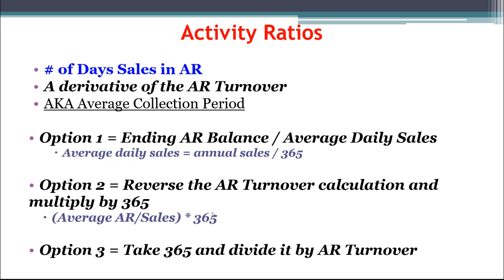Option three, which might be the quickest if you already know the accounts receivable turnover ratio: simply take 365 days and divide by the accounts receivable turnover ratio to get the average collection period. The lower this is the better, but if we have too tight a credit policy, we may not be able to generate a lot of sales — only allowing a small percentage of customers to buy on credit means we could be losing out on sales we'd get by taking on just a little more risk.